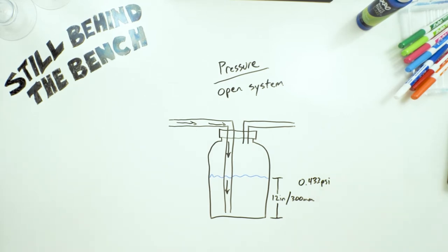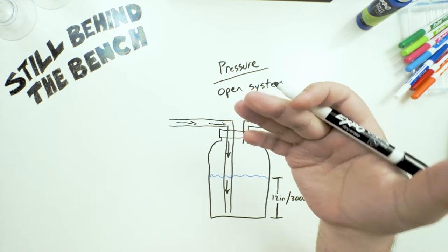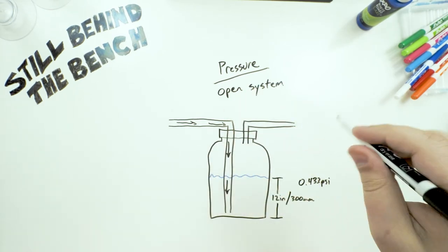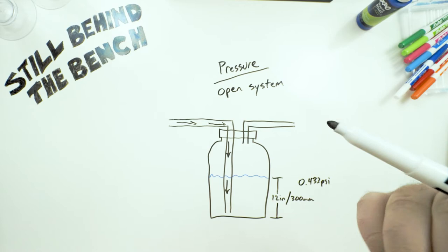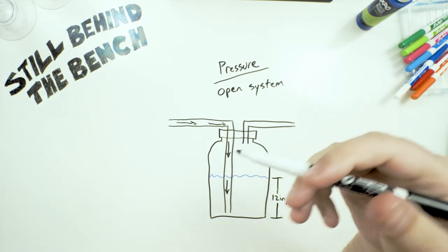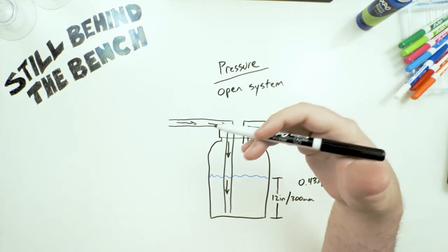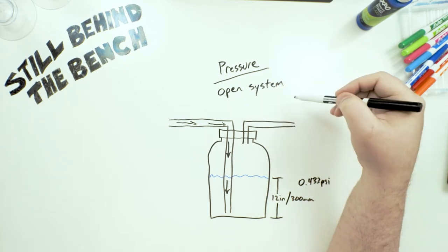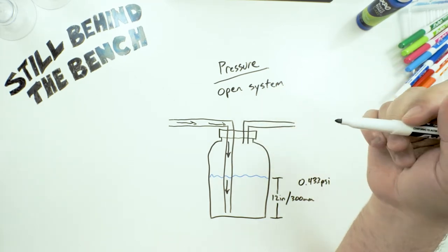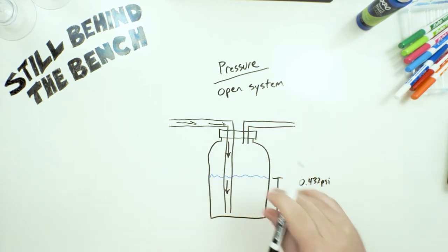The pressure that needs to be overcome for the vapor coming through the thumper is actually not that great. At 12 inches it's about 0.433 psi. That's not a lot, but as we'll see later on when I start drawing out some still designs, the amount of pressure if you build a system that can be turned from an open system into a closed system, say closing a valve, pressure can ramp up really quickly and dangerously.